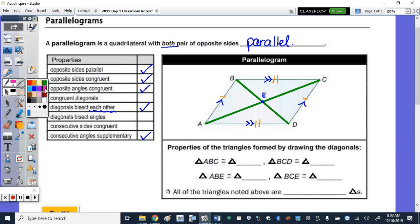The next one, opposite angles are congruent, so that means angle A is congruent to angle C, and angle B is congruent to angle D.